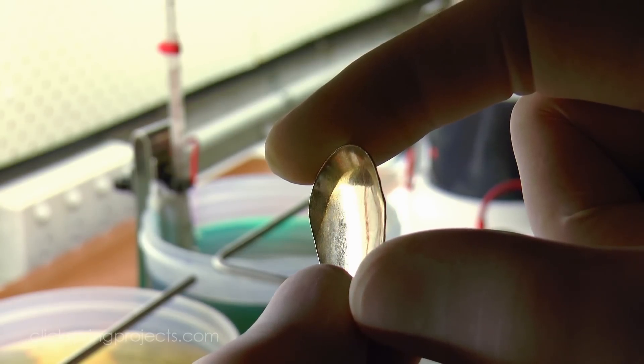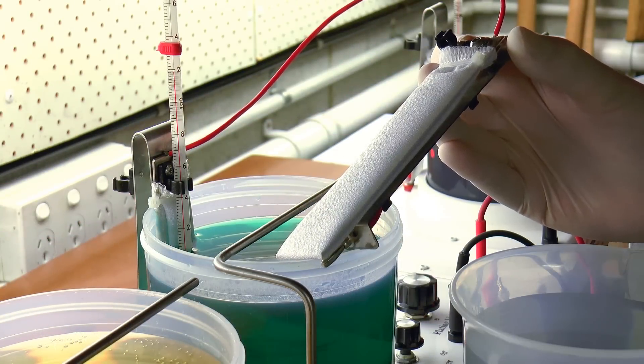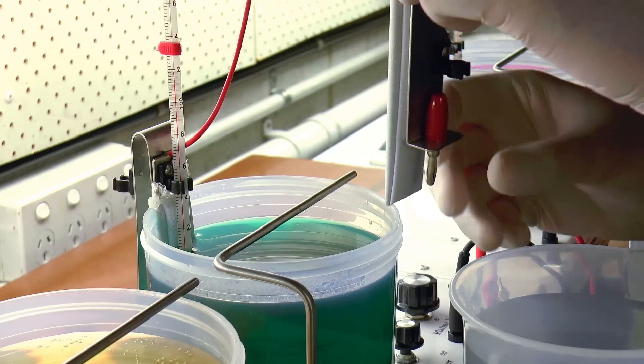Now ideally of course, we'd like as close to a uniform thickness to the plating as possible, and this can sort of be addressed by rotating the part in the nickel solution mid-plate.